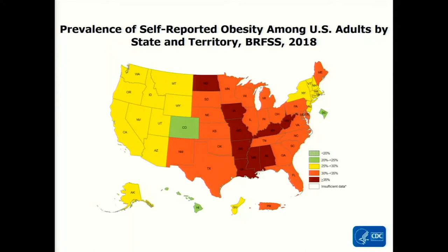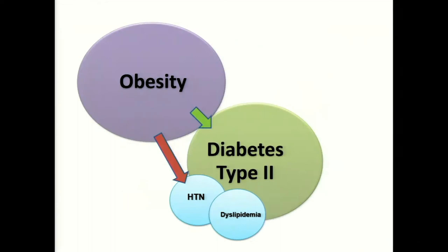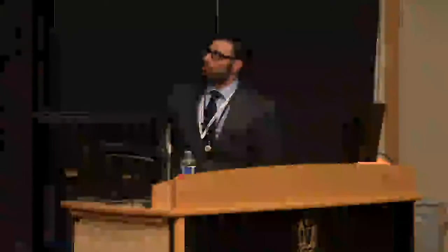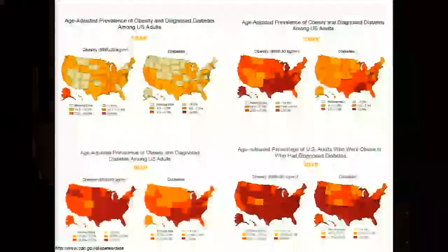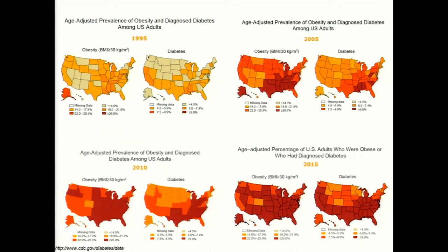Obesity often leads to type 2 diabetes, which is associated with hypertension, dyslipidemia, and cardiovascular risk factors. Looking at the maps from 1995 all the way to 2015, you don't even need to look at numbers — just the amount of red tells the story. The epidemics of obesity and diabetes parallel each other as they continue to increase over time.